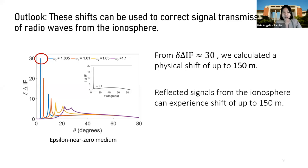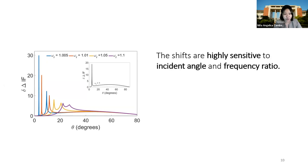Thus, one outlook of the study is to be able to use the shifts to correct signal transmission of radio waves from the ionosphere. Second, we notice that the shifts are highly sensitive to the incident angle and the frequency ratio. Hence, we can then use the shifts and work backwards to measure the frequency parameters related to the ionosphere properties such as its electron density and the magnetic field.